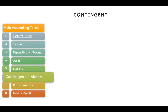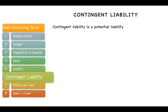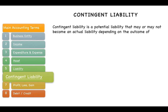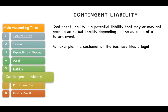The next term is contingent liability. A contingent liability is a potential liability — it has not yet occurred and may or may not become an actual liability depending on the outcome of a future event. For example, if a customer files a legal suit, it will not be treated by the business as a liability.